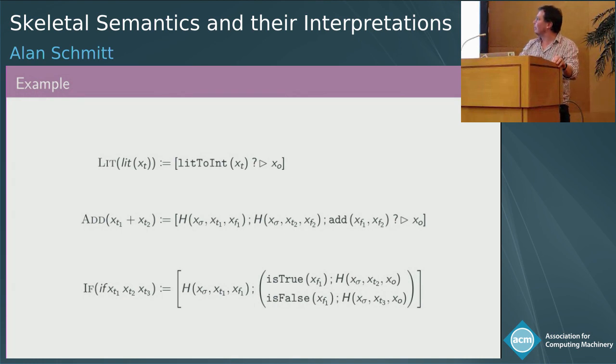In this slightly extended example, we have four filters. The lead to int and the add filters compute new values, whereas the is true and is false filters are predicates that may make a branch not be taken. In our rules we have special names like x sigma here on the xo. So x sigma represents a state at the beginning of the execution, and xo is a state when we are finished. In the paper you can find a big example showing you how we use that.